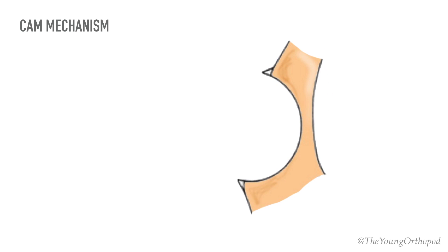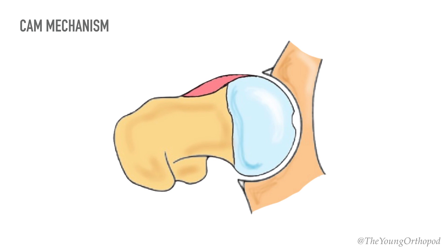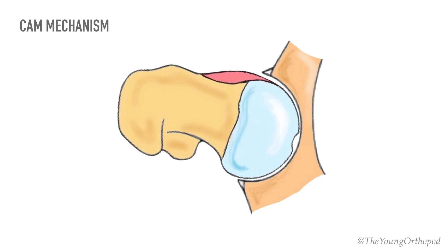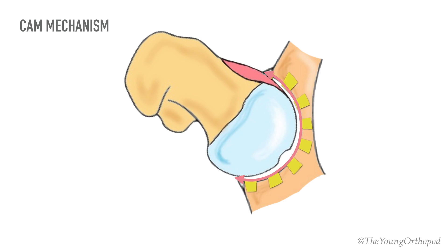In the cam mechanism, bony thickening at the femoral head-neck junction causes jamming of the femoral neck against the front of the acetabulum and abrasion or delamination of the acetabular cartilage. The acetabular labrum may degenerate later in the course of the disease.